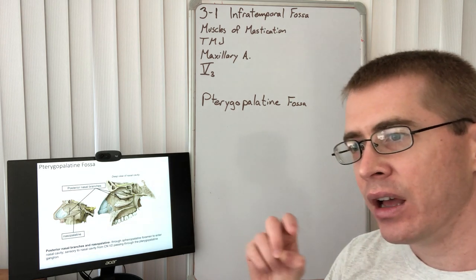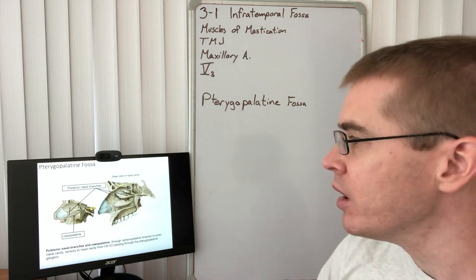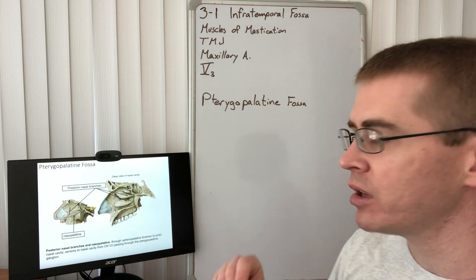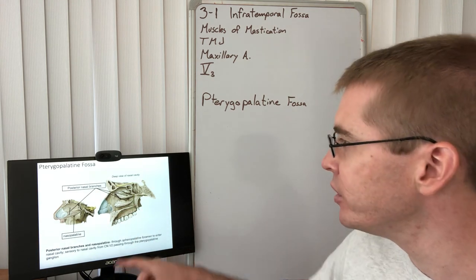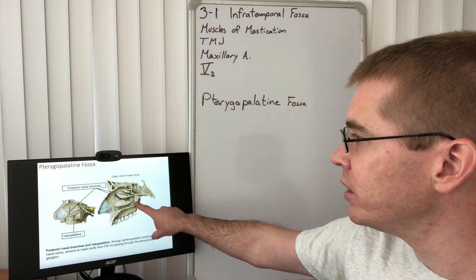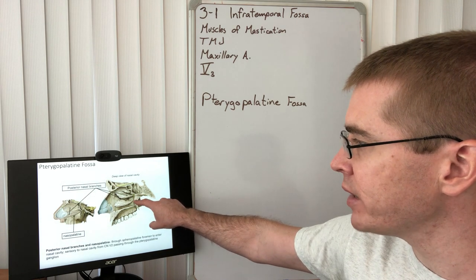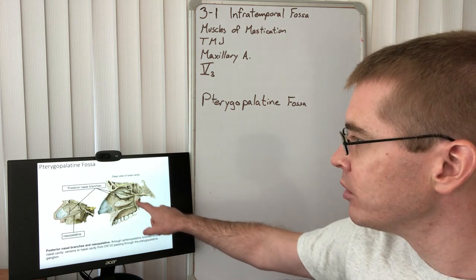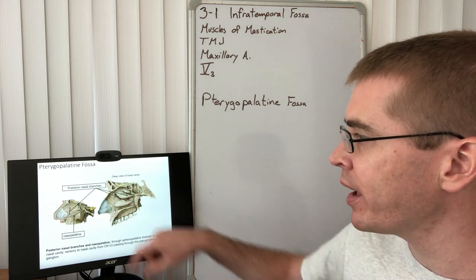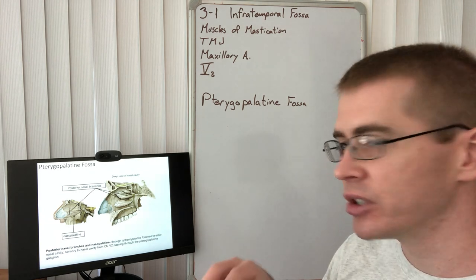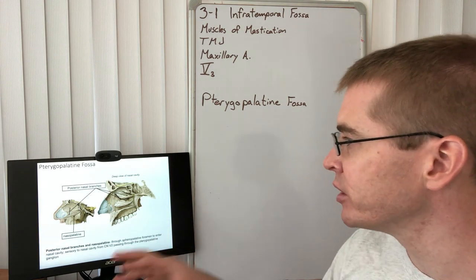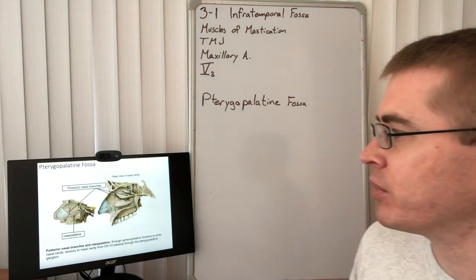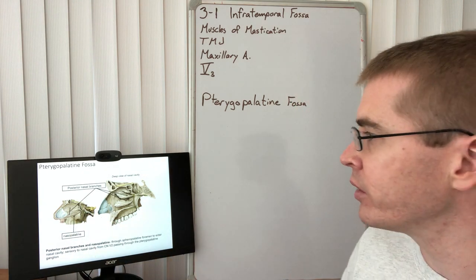The pterygopalatine ganglion has components of V2 in it which travel down into the region of the palate. These nerves are called the greater and lesser palatine nerves that supply the palate. Branching off of there we'll also have some sensory branches that go to the nose. We'll have posterior nasal branches and we'll also have a nasopalatine branch that heads along the septum.